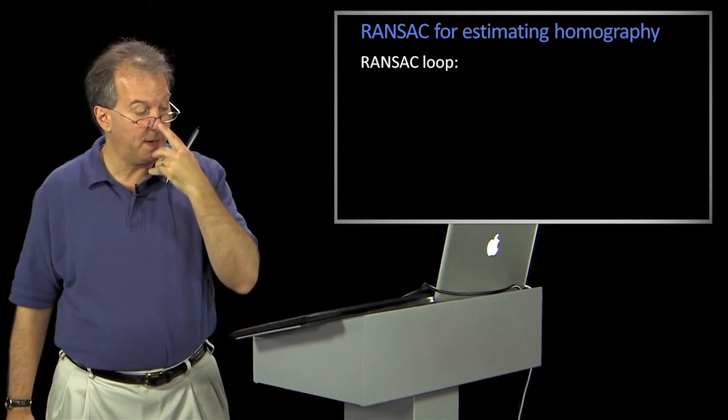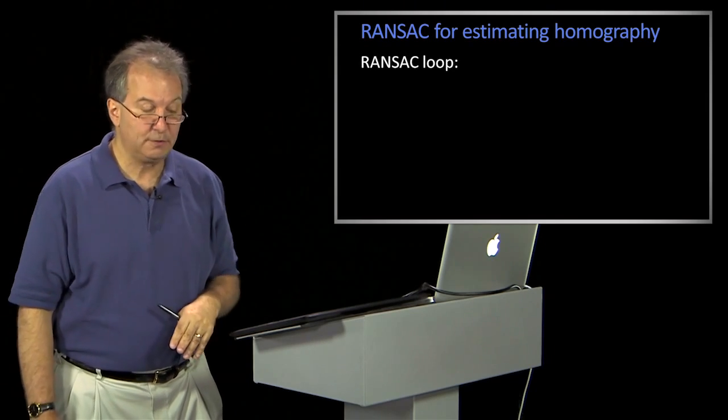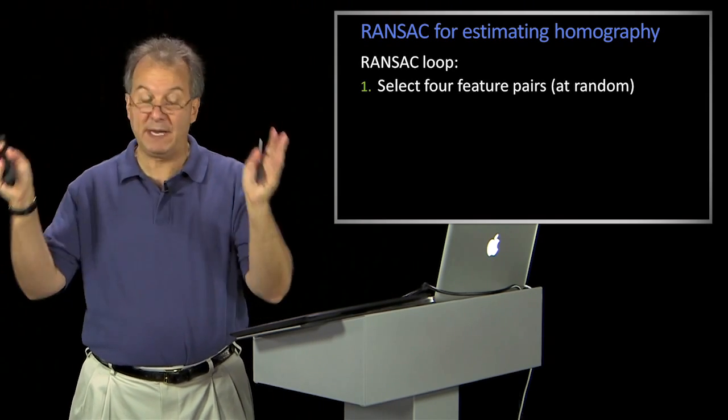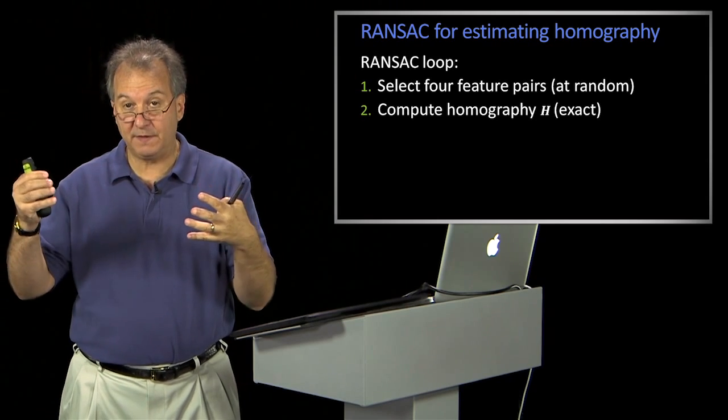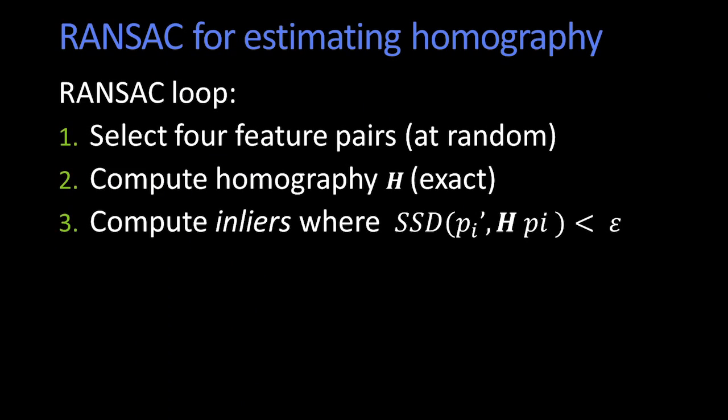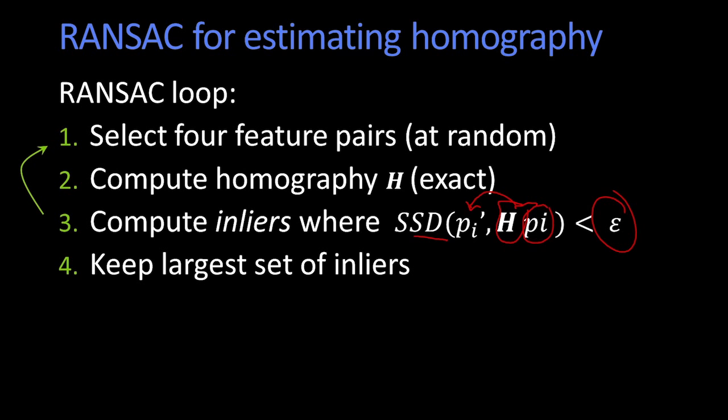So here's, if we were doing a homography, here would be a RANSAC loop. Select four feature pairs at random. Compute the homography, H. That's the thing that moves it from one to the other. And then, what this means is, take a look at the square distance between some point in the image transformed by H, and it lands some place. And take a look at its distance from what it claimed was the putative match in the other image. And count all the ones that are less than some threshold. Just do that loop for a while.